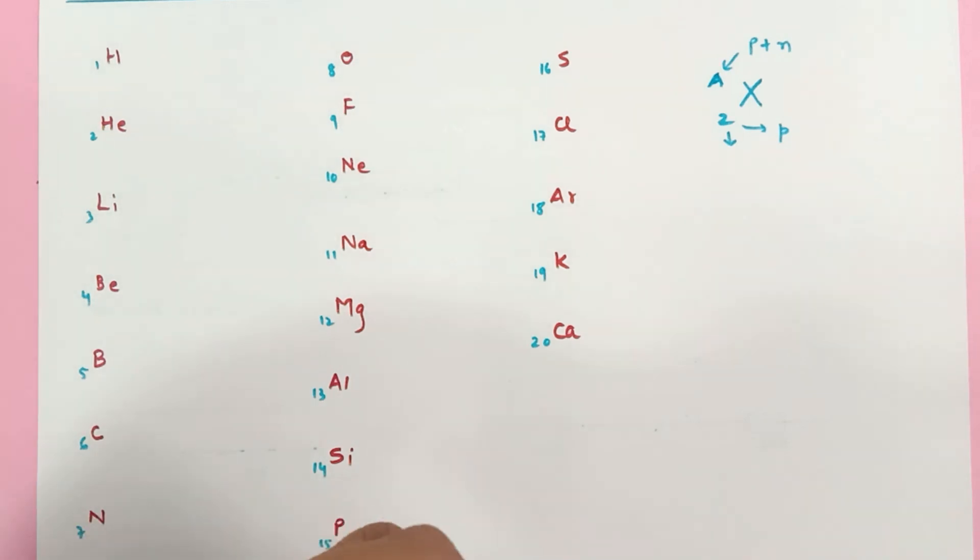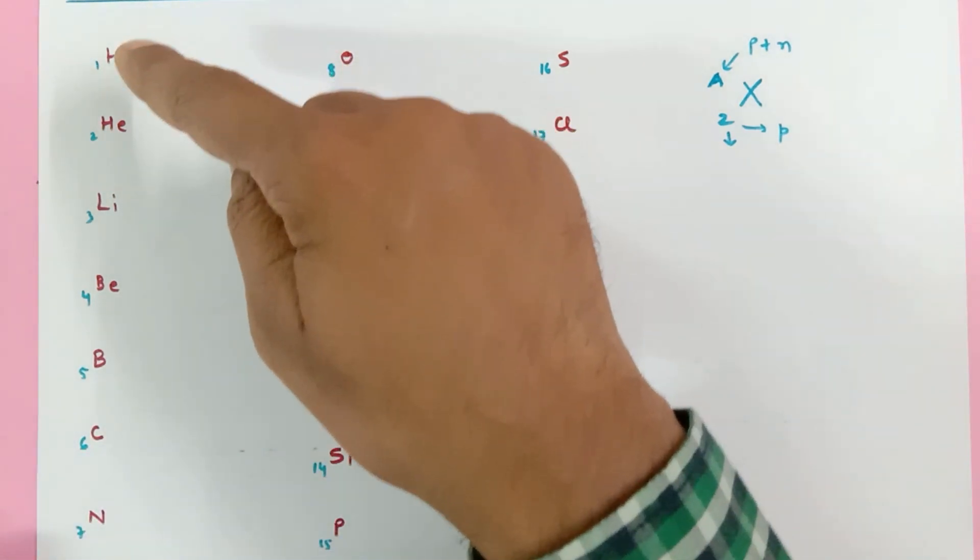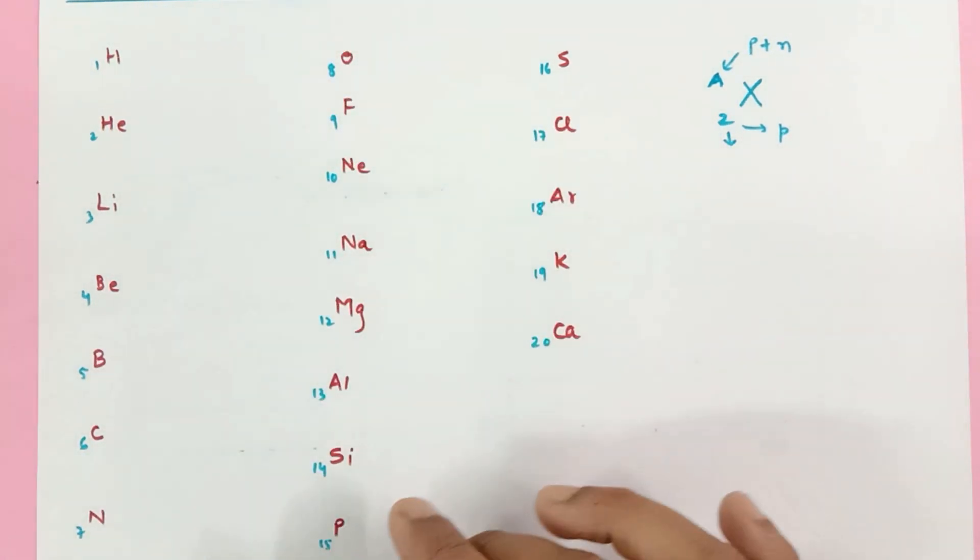Okay. So these are 1 to 20 elements written in sequence and the atomic numbers are just the numbers in the sequence. Very easy to remember.